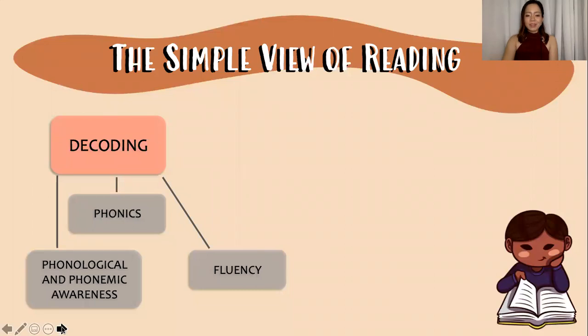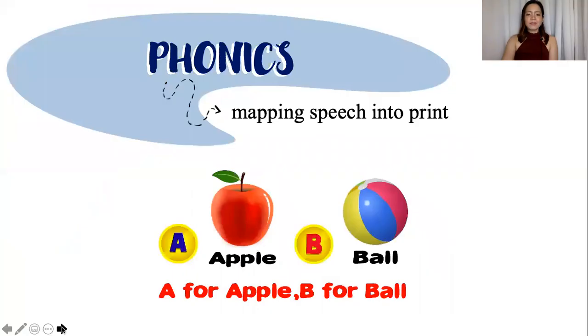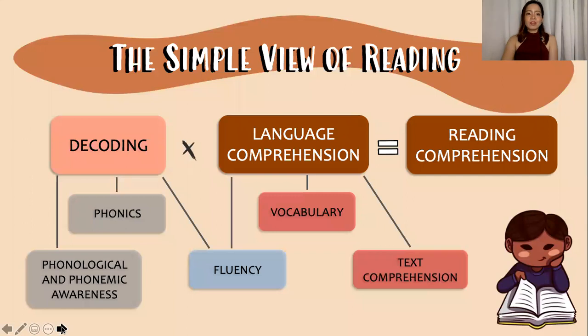Are you ready for the next component? The first two are about hearing sounds at some level. Phonics is knowing that sounds and letters are related. We are introducing print. Having the ability to read, write, and pronounce words require the knowledge of the rules of the English alphabet or even the Filipino alphabet. Phonics is mapping out speech into print. So, when the children learn that specific sounds correspond to letters, they learn the alphabetic principle.